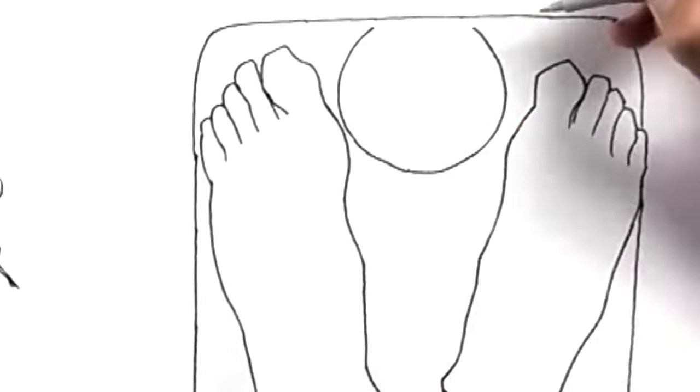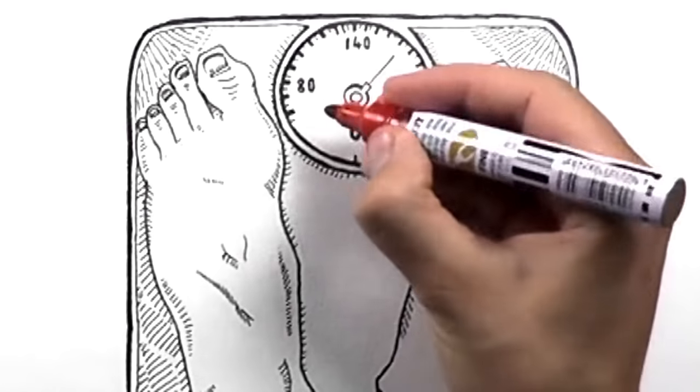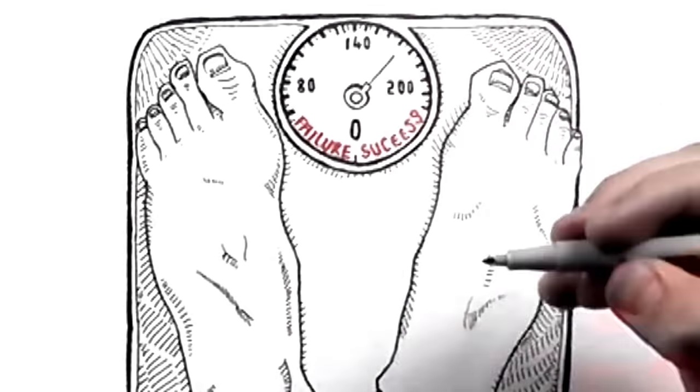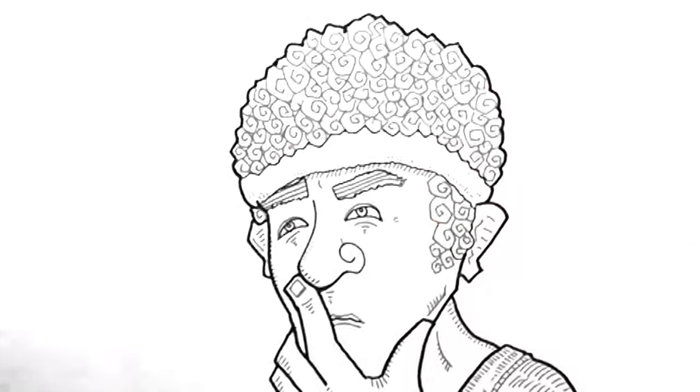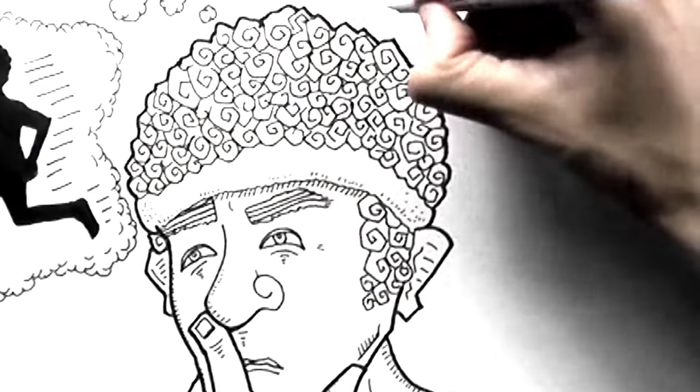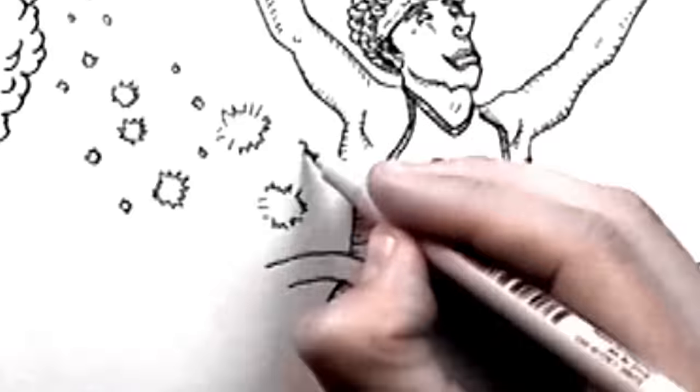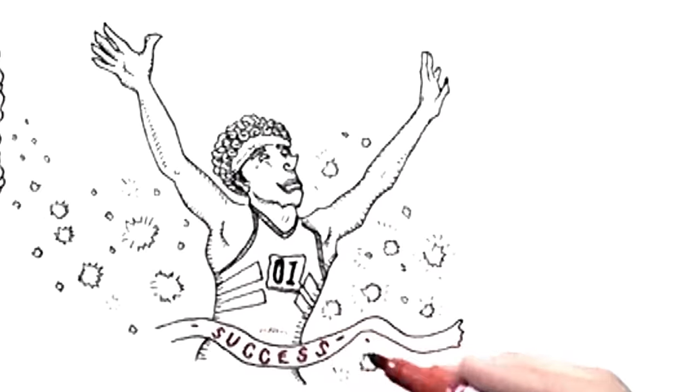If I want to lose weight, I get on the scales, this gives me proof positive if I have succeeded or not. It does not give me any help to succeed. If I plan to go for a series of runs and decide how much I am going to eat, then I have put in place two leading measures that will help me succeed.